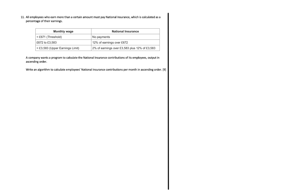Here we have another algorithm question — this one is also worth nine marks, question number 11. All employees who earn more than a certain amount must pay national insurance, calculated as a percentage of their earnings. There's a table with different ranges and corresponding national insurance contributions. A company wants a program to calculate national insurance contributions of its employees, output in ascending order.